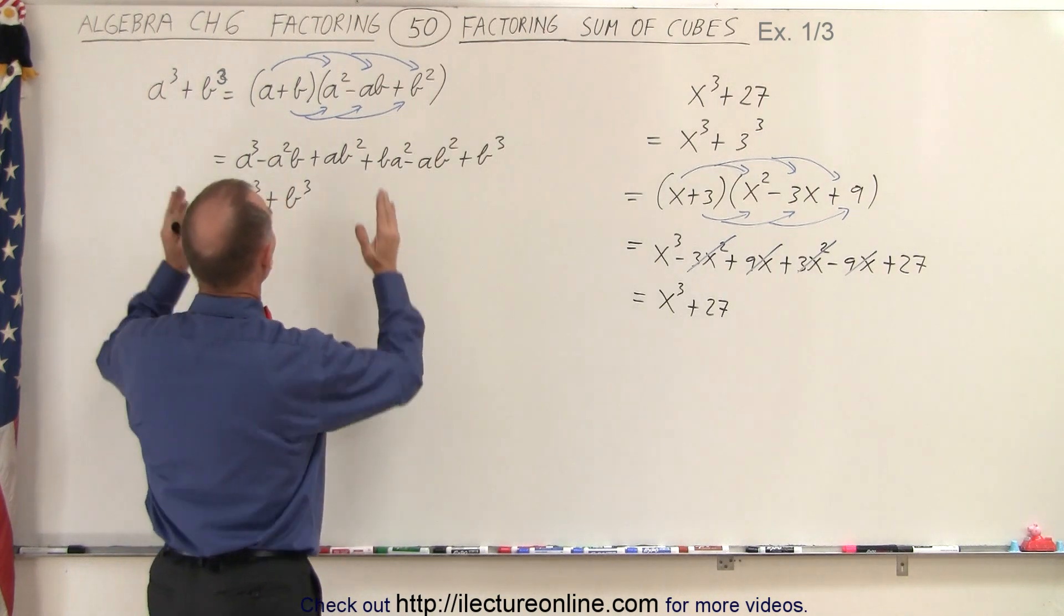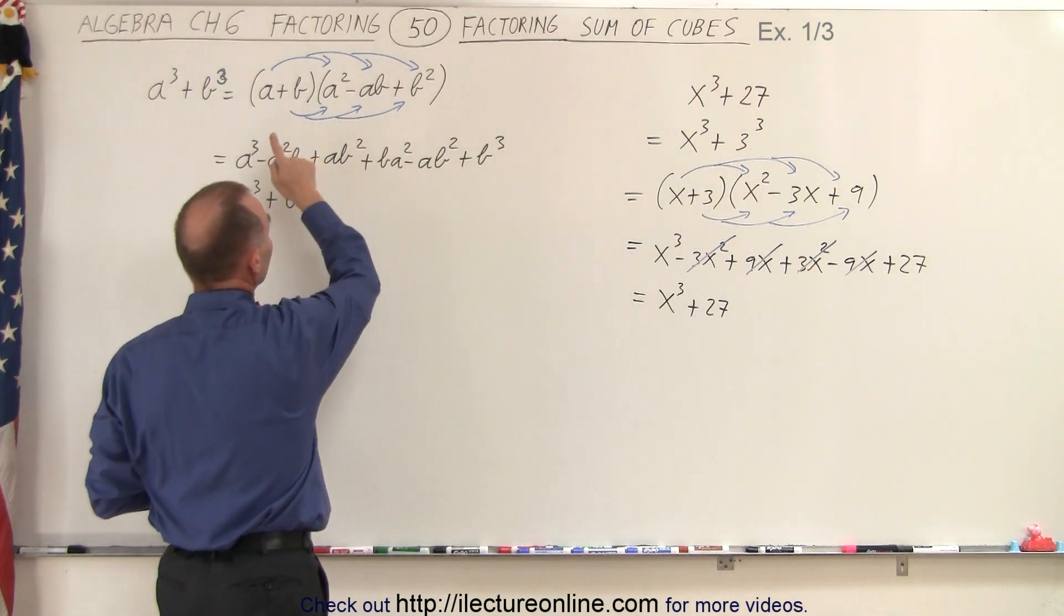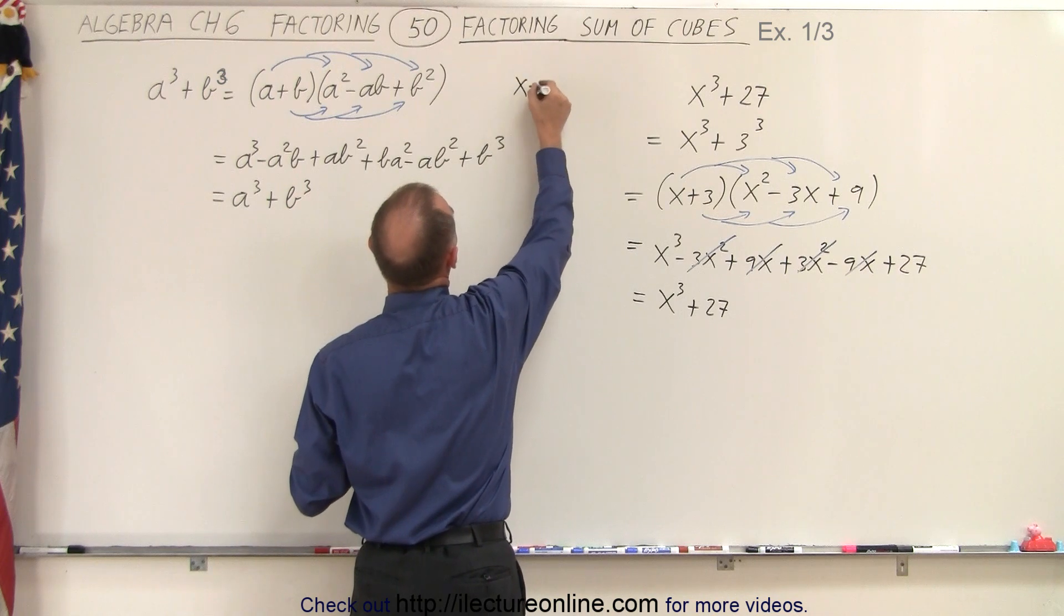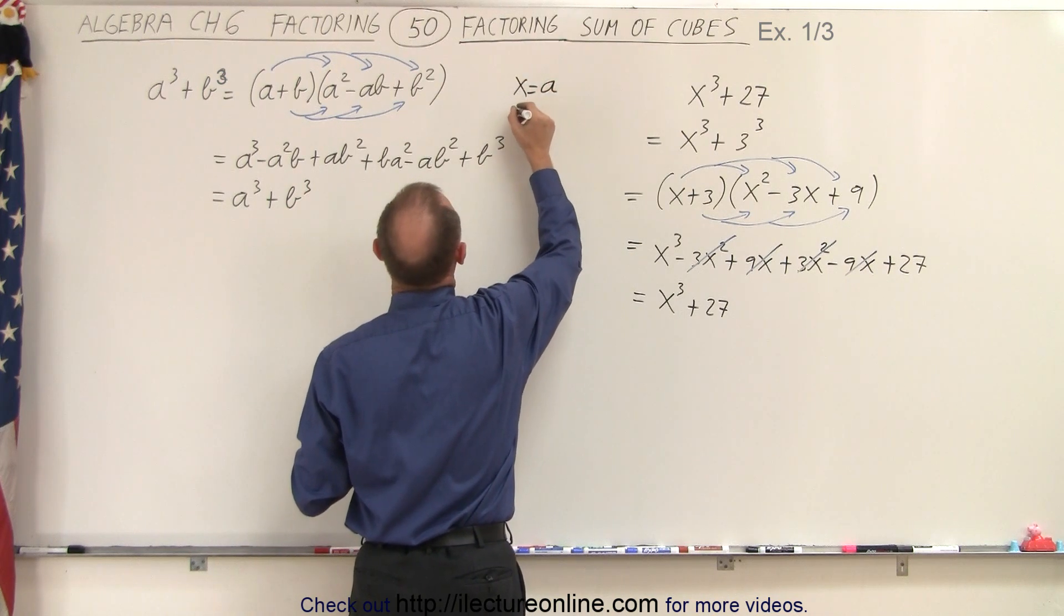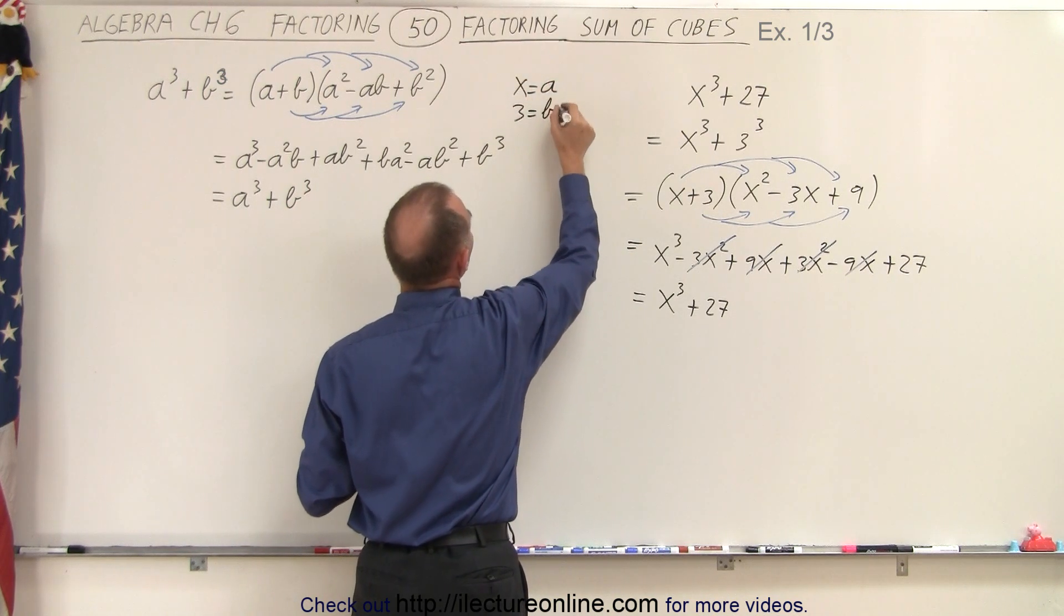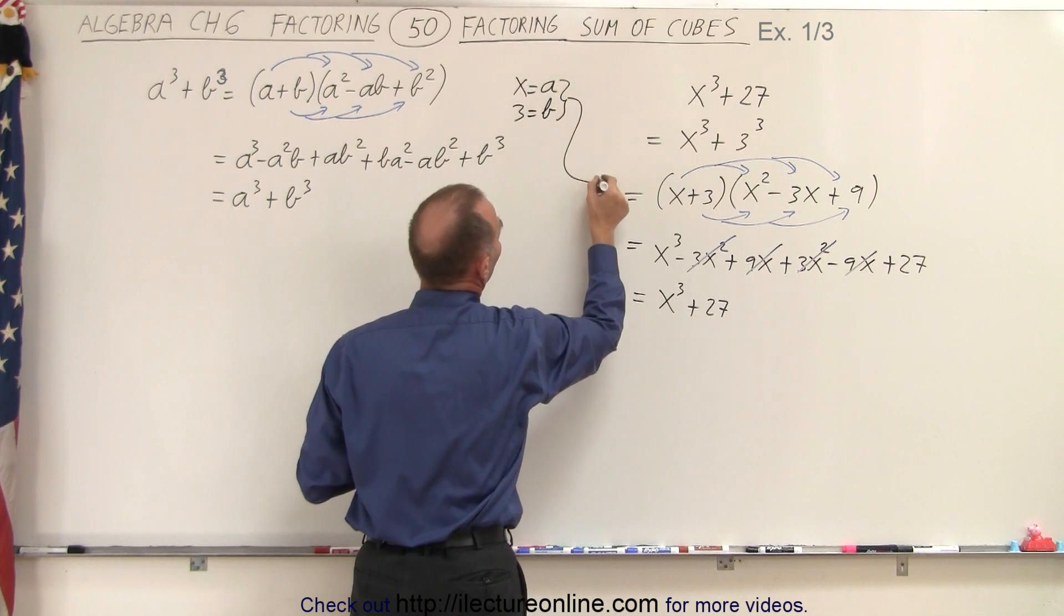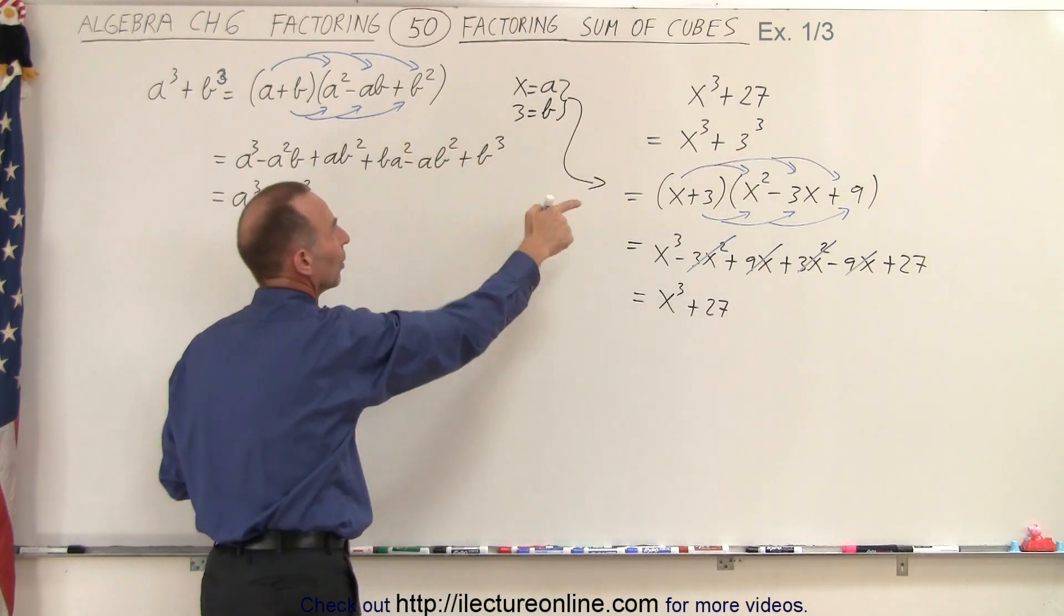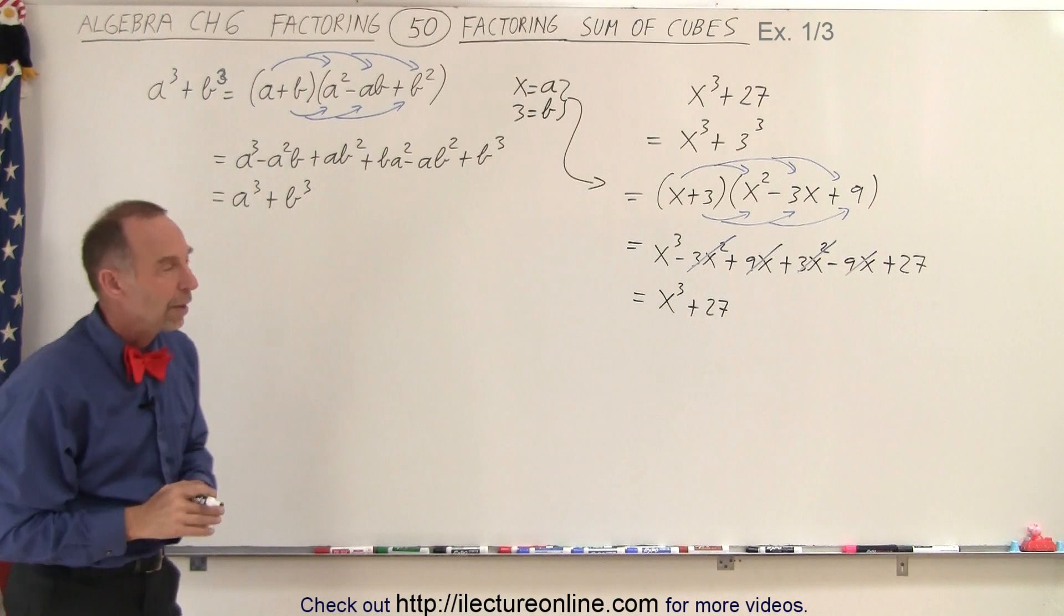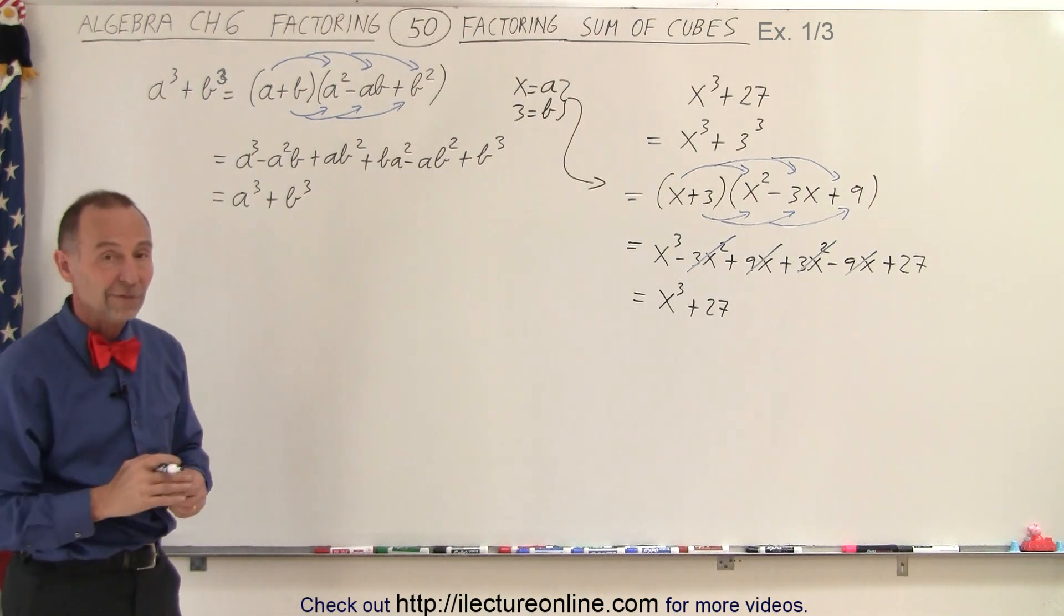So by using the very same format, but then recognizing that in this case, we know that x equals a and 3 equals b, and we use that in the very same way as we did over here to factor the sum of cubes. And that is how it's done.